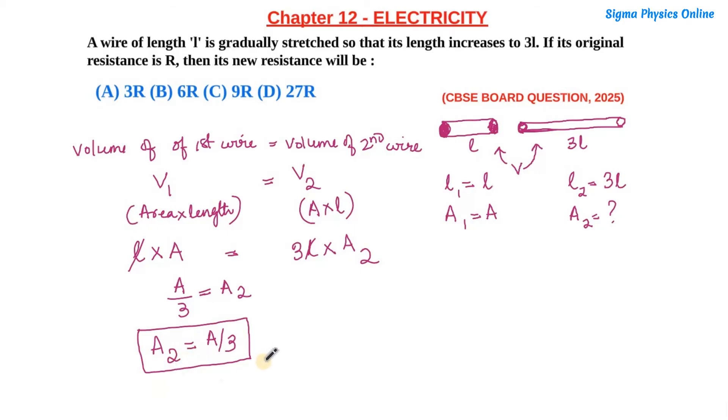We know that resistance is given by the formula R = ρl/A. Let's write this as equation 1. Now, the new resistance R' will be R' = ρl₂/A₂, which is ρ times l₂ by A₂.